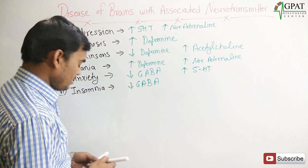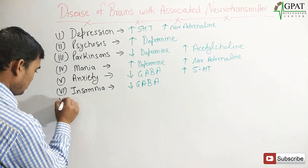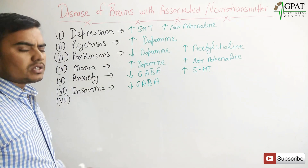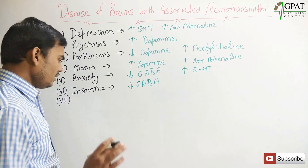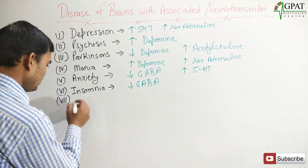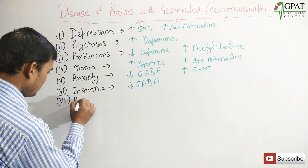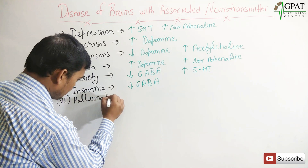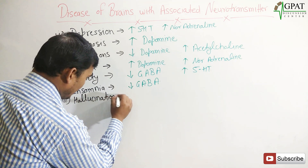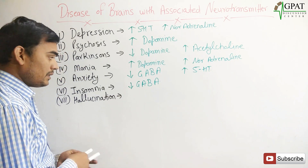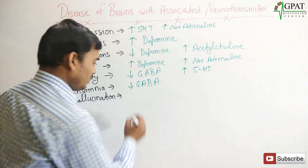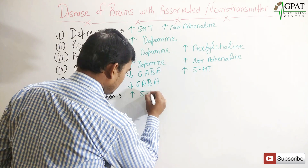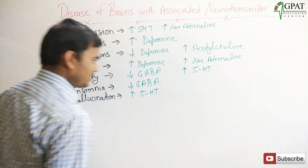Next is hallucination. There are various causes of hallucination, but the major one involves neurotransmitter changes. In hallucination, your 5-HT (serotonin) level increases — increased 5-HT.